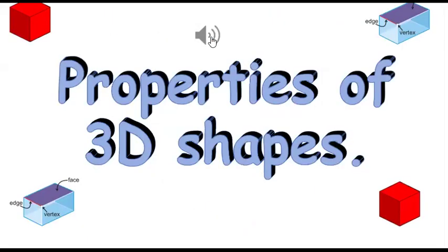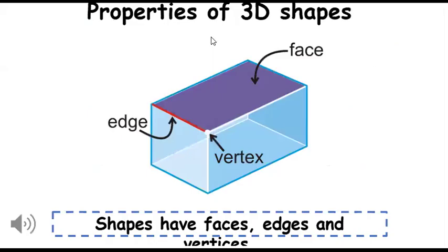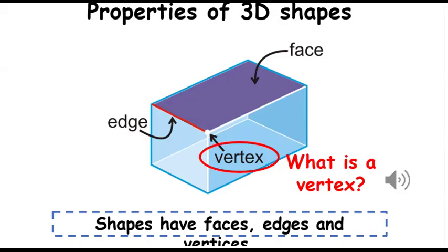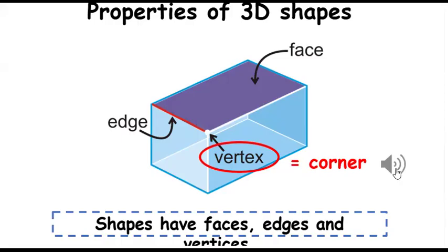Properties of 3D shapes. Shapes have faces, edges, and vertices. What is a vertex? A vertex is a corner.